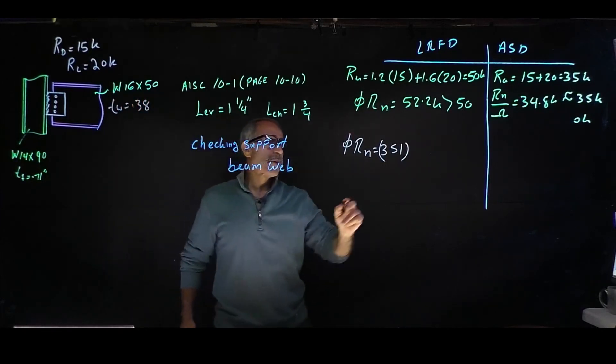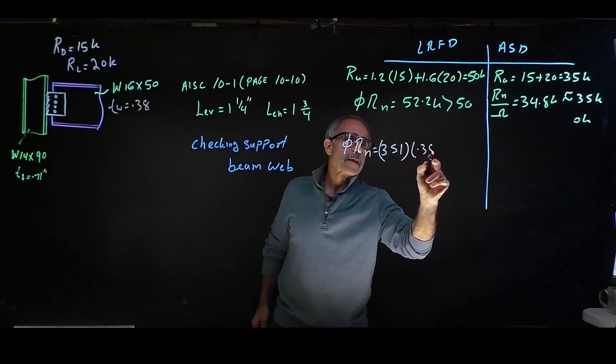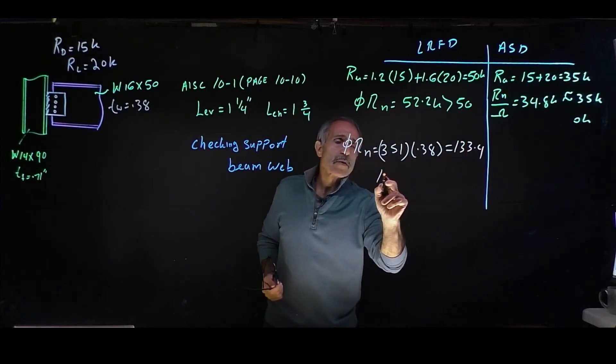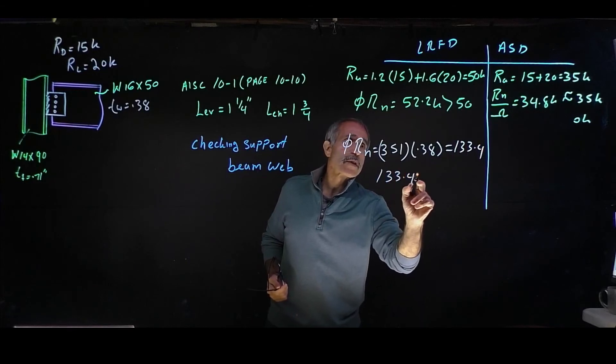tw for here came out to be 0.38. So we're going to multiply this by 0.38, and that comes out to 133.4.